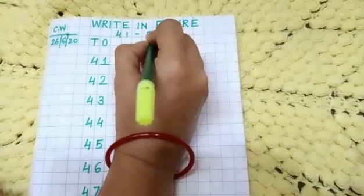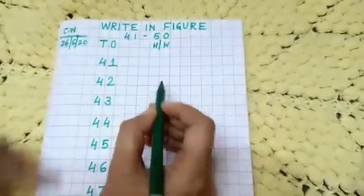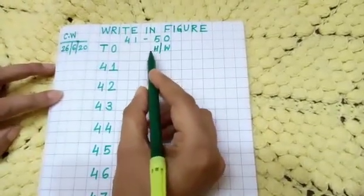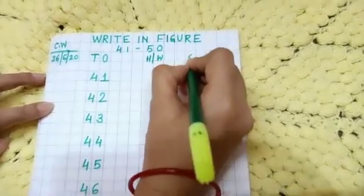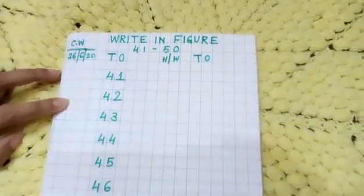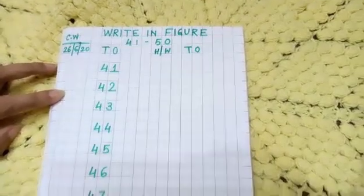And here you will write H oblique W. That means homework, HW. Okay, under ones and tens, you will write one line homework. Okay children, thank you.